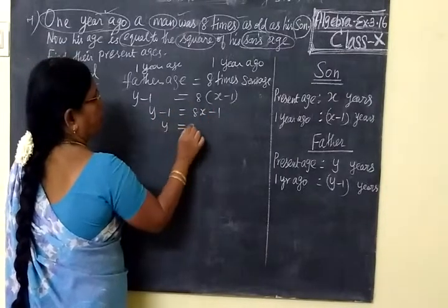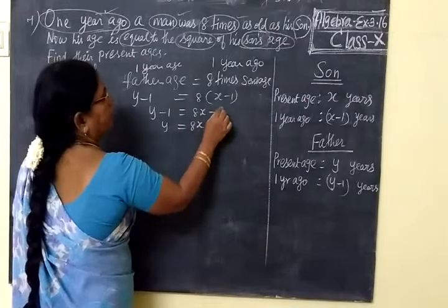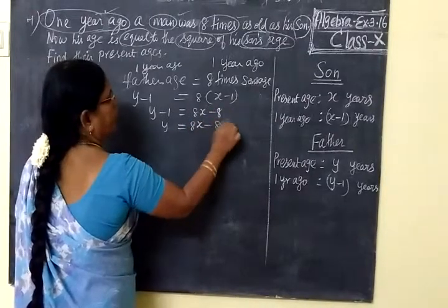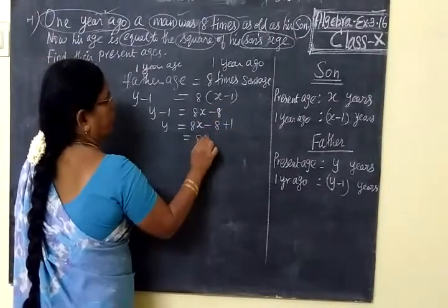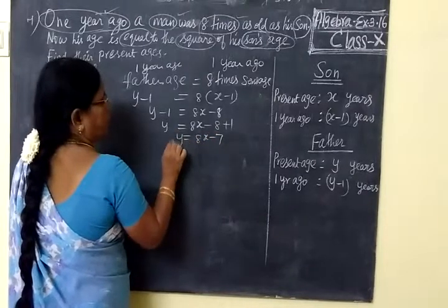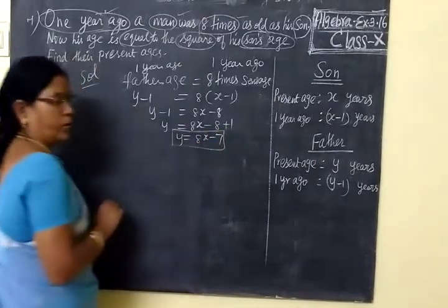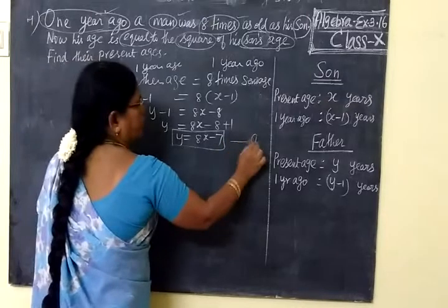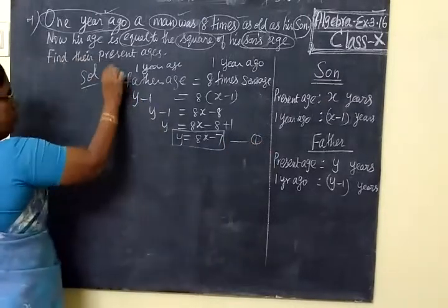Minus 1 on the other side. Minus 8 plus 1 is minus 7. So here we are getting the y value. Mark this as equation 1. Now mark it as 1. Next is 2.